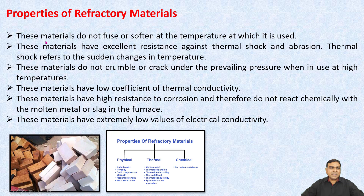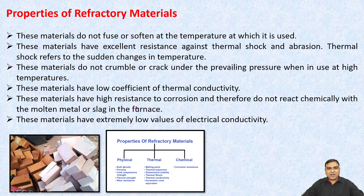Properties of refractory materials: these materials do not fuse or soften at the temperature at which they are used. They have excellent resistance against thermal shock and abrasion. Thermal shock refers to sudden changes in temperature. These materials do not crumble or crack under prevailing pressure at high temperatures. They have a low coefficient of thermal conductivity, high resistance to corrosion, and do not react chemically with molten metal or slag in the furnace. They also have extremely low values of electrical conductivity.